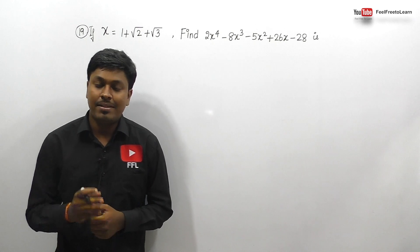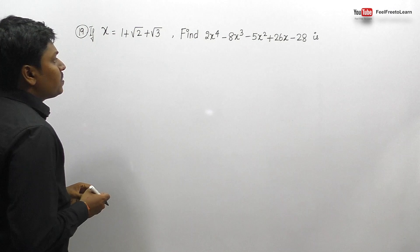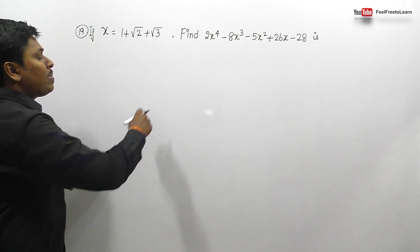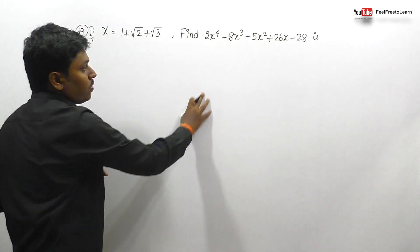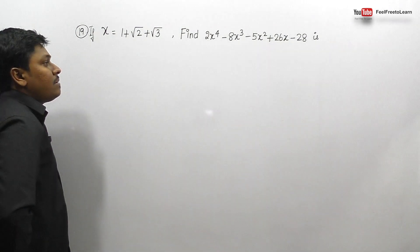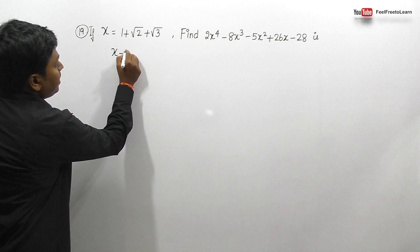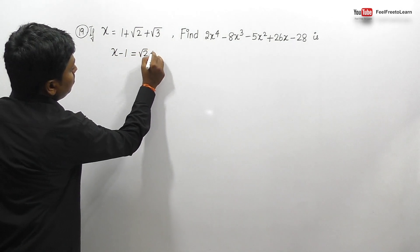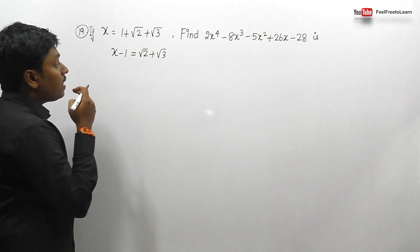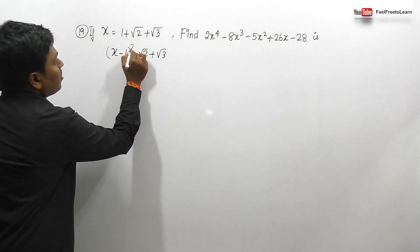Moving on to set number 5, question number 19. x is equal to 1 plus root 2 plus root 3. By keeping this x term, we need to find the value of the expression in terms of x power 4. I'm going to simplify this expression. This can be written as x minus 1 equals root 2 plus root 3, by bringing plus 1 towards the left hand side.